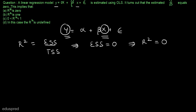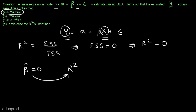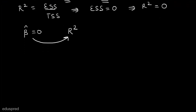If you understand the concept of R-squared well, this is a direct question and the answer is part A. But if you want to solve it mathematically, we need to establish a relationship between beta hat and R-squared. Let's write the formulas to calculate beta hat and R-squared.